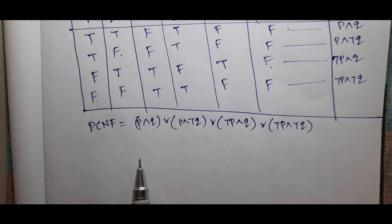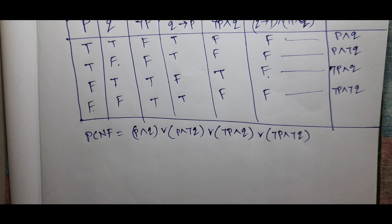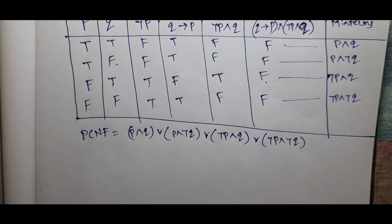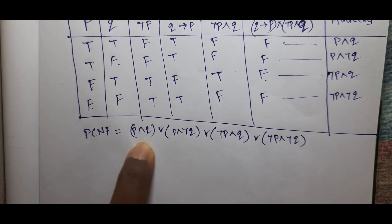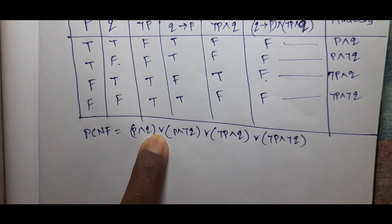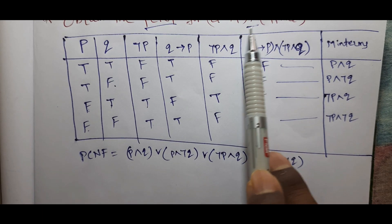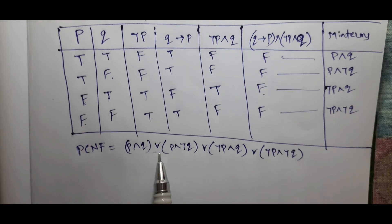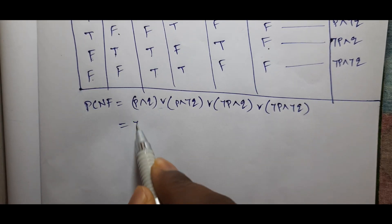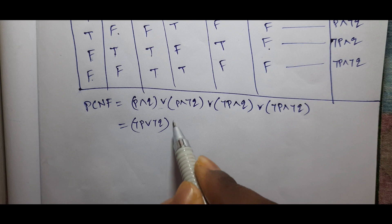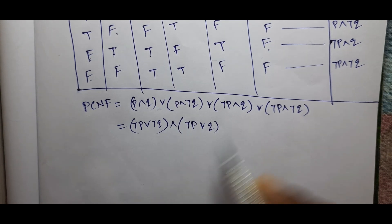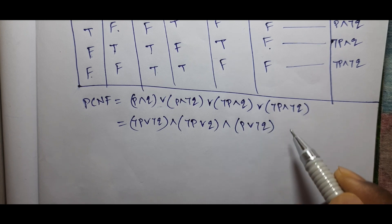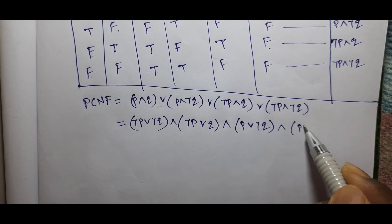Now, if we have PCNF, we can choose the PCNF by selecting the appropriate clauses — combining negation Q and P, R, Q to form the Principal Conjunctive Normal Form.